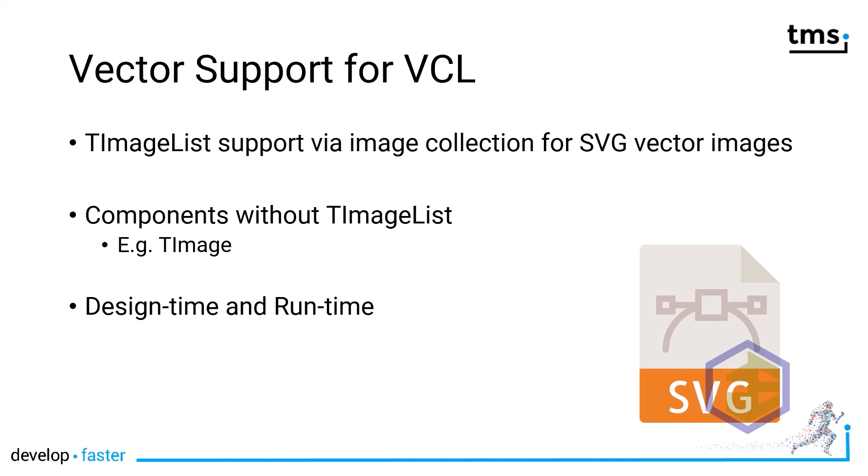TMS introduces another solution for this: an image list that supports SVG vector images. That means all the different sizes are calculated and provided on the fly, without you doing anything — you simply provide a vector image for your icons. These vector images work with any VCL control, including TImage and the ImageCollection, so they can be used easily with standard toolbar controls from Embarcadero as well as toolbar controls and icon controls from TMS Software. Support is available at both design time and runtime. The big advantage is that your application will be ready for the future, scaling vector images as needed, always crystal sharp and never pixelated.